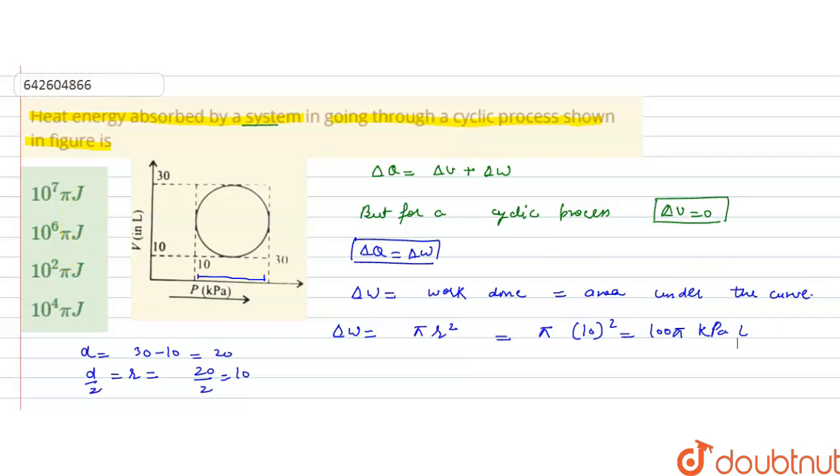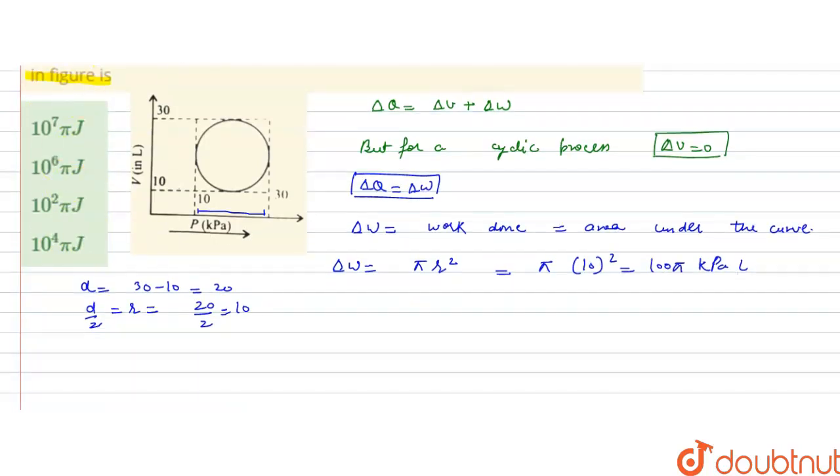Now, 1 Pascal is equal to, 1 Pascal is equal to, 10 raised to the power minus 3 meter cube. Sorry. 1 Pascal is equal to, 1 Newton per meter square.